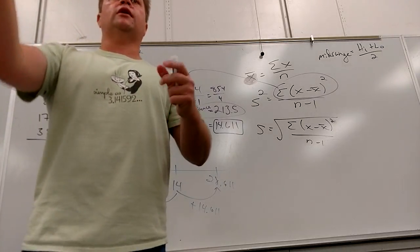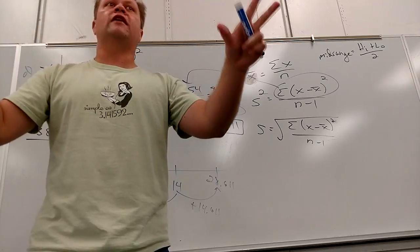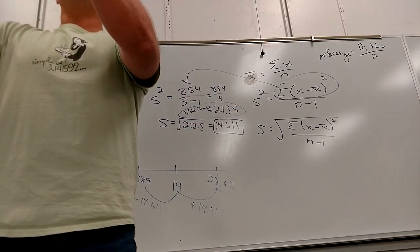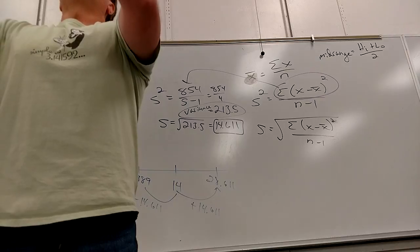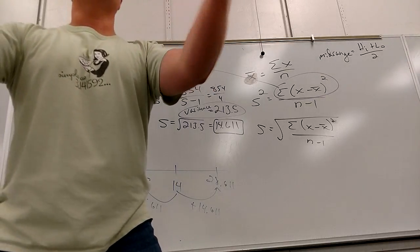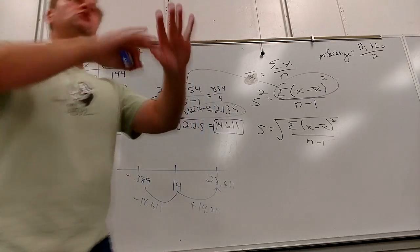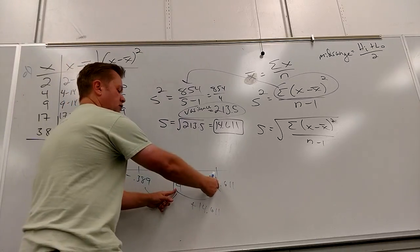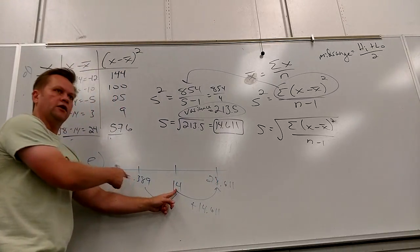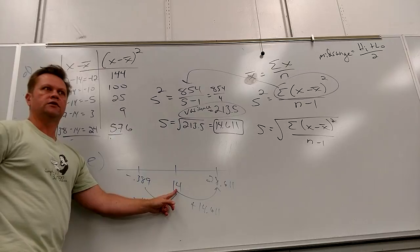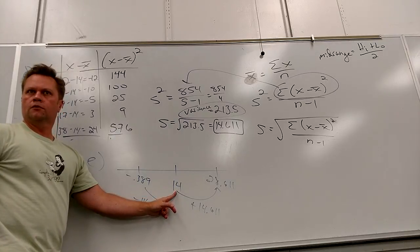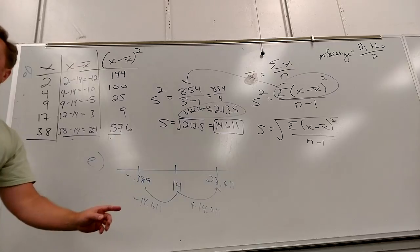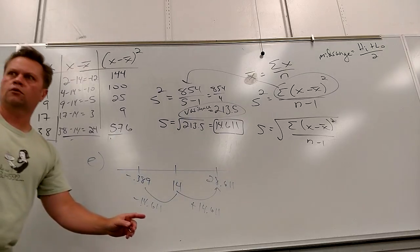If I asked you to guess my weight within five pounds, you could be above by five or below by five — that's what 'within' means. So 'within one standard deviation' means the mean, one standard deviation up from it, and one standard deviation down from it.